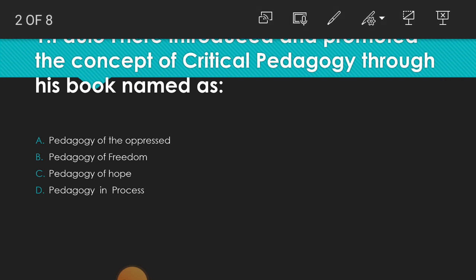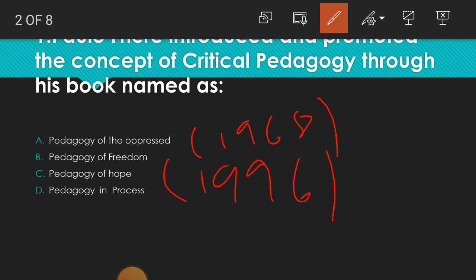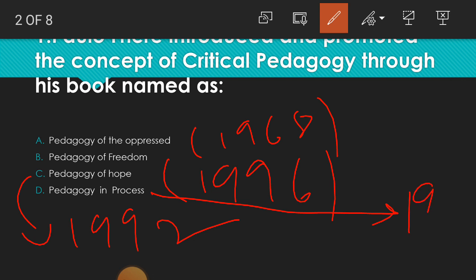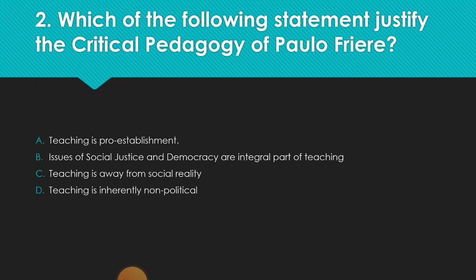Pedagogy of the Oppressed was published in the year 1968. Pedagogy of Freedom was published in 1996. Pedagogy of Hope was published in 1992, and Pedagogy in Process was published in 1978. From this we can understand that Paulo Freire first coined the concept of critical pedagogy in his book Pedagogy of the Oppressed.